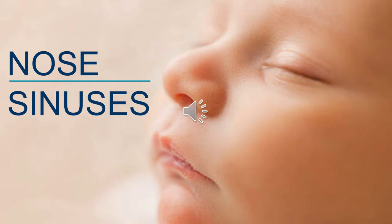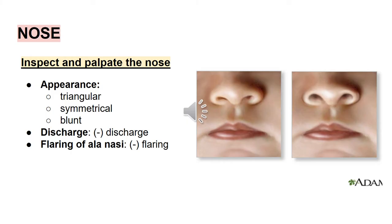Nose and Paranasal Sinuses. For the nose, inspect and palpate by first checking the appearance — if the nose is triangular in shape, symmetrical on both sides, and blunt.